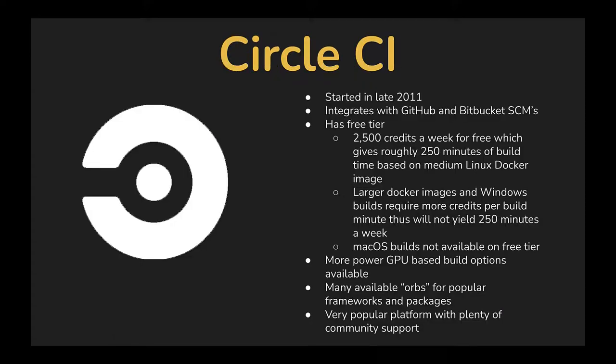Next up, CircleCI — a more mature platform. It's been going since 2011. It integrates with both GitHub and Bitbucket source code management systems and it does offer a free tier. It offers 2,500 credits a week, which gives about 10,000 credits a month when using a medium-based Linux Docker image, which is the default for builds, yielding roughly about 250 minutes of build time per week. Larger Docker images and Windows builds require more credits per build minute.